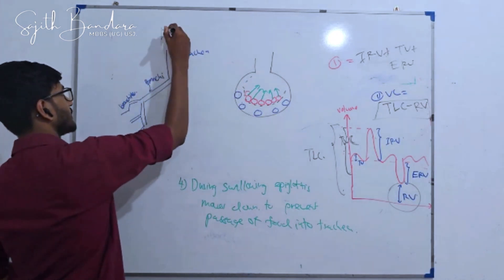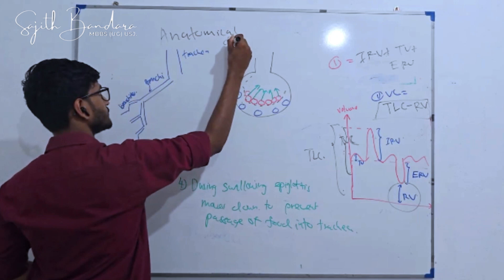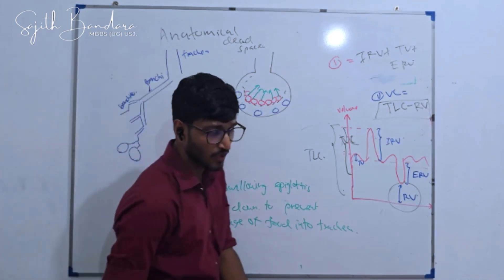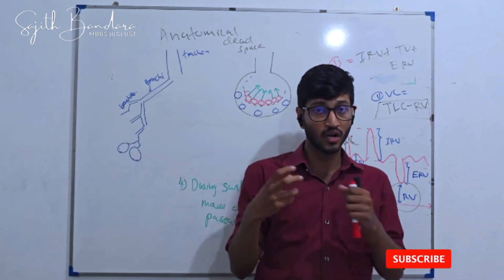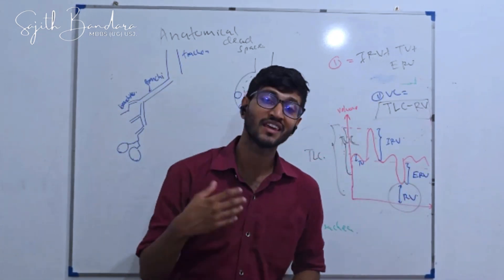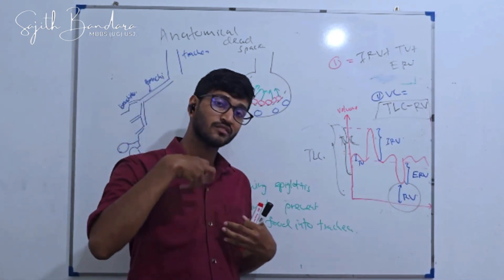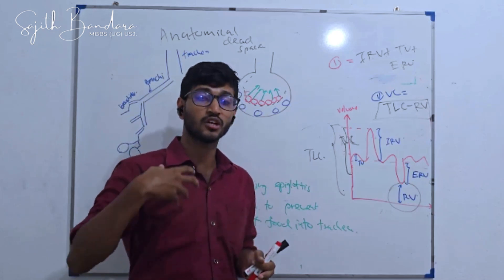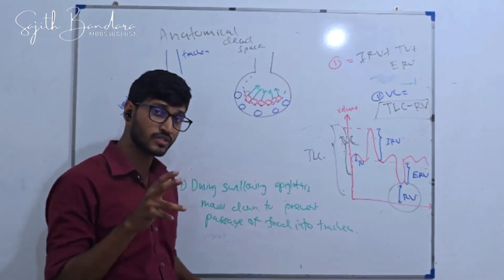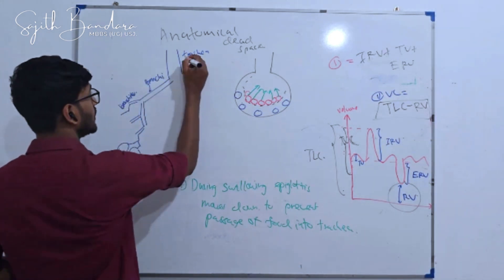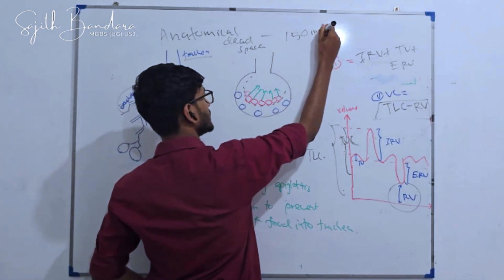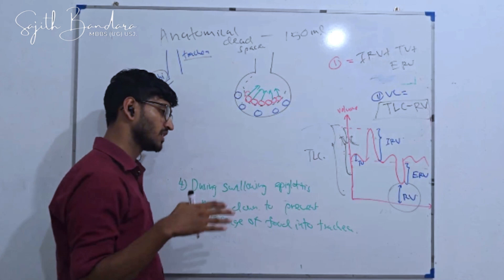Now I am going to talk about anatomical dead space. The anatomical dead space is the amount of air which is present in the branching airways of the respiratory tract which are not directly involved in gaseous exchange. The resource book specifically mentions these branching airways: trachea, bronchi, as well as bronchioles. The volume of anatomical dead space is 150 milliliters.